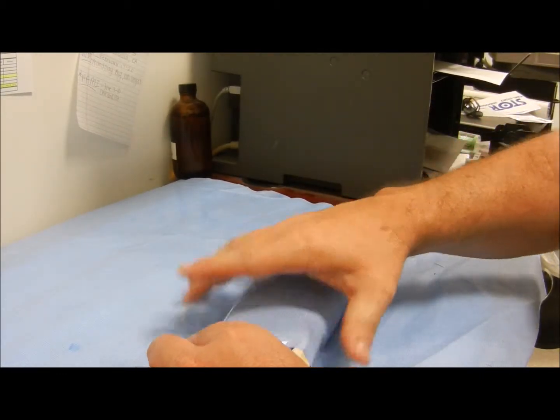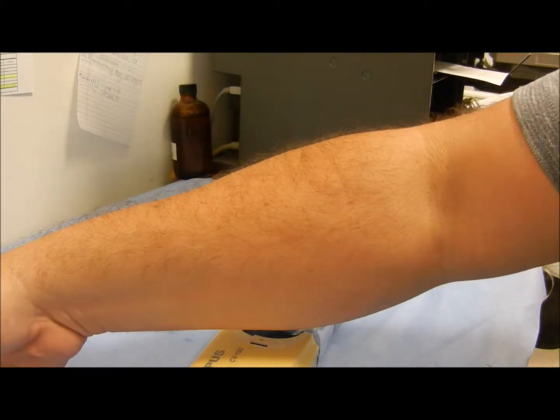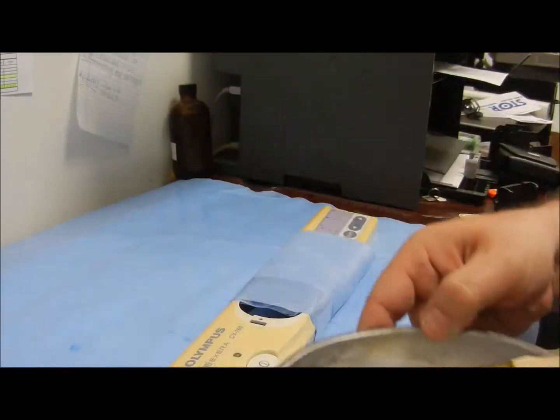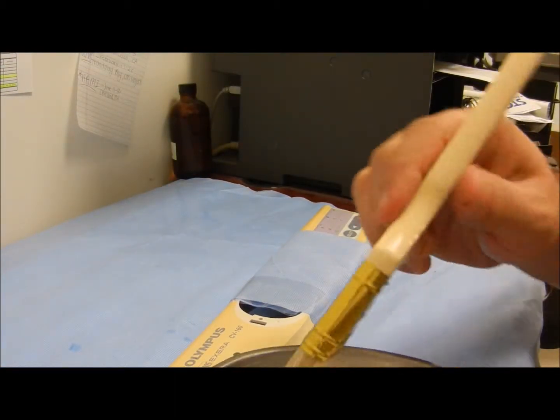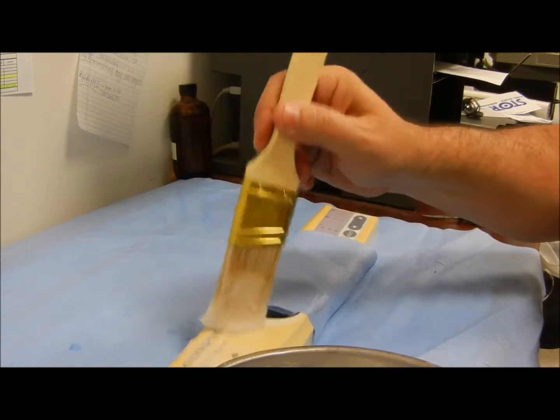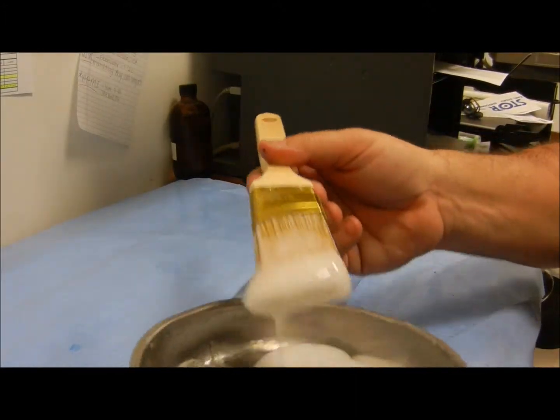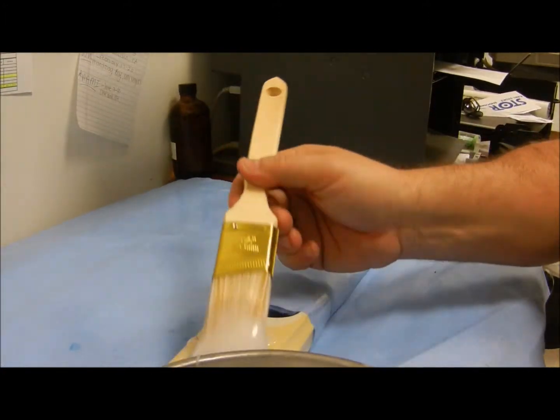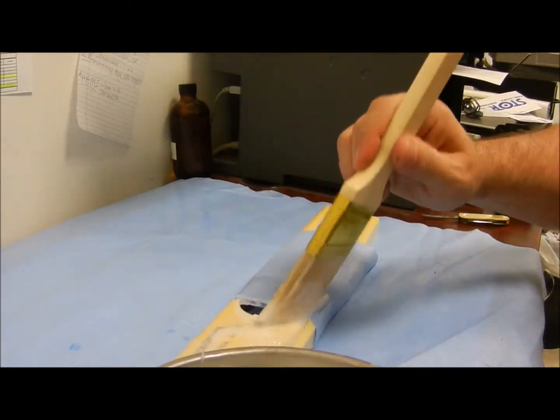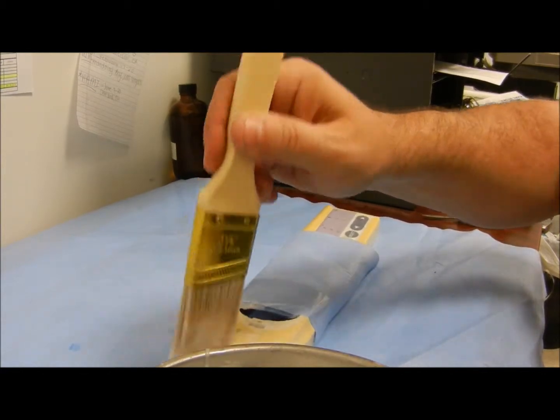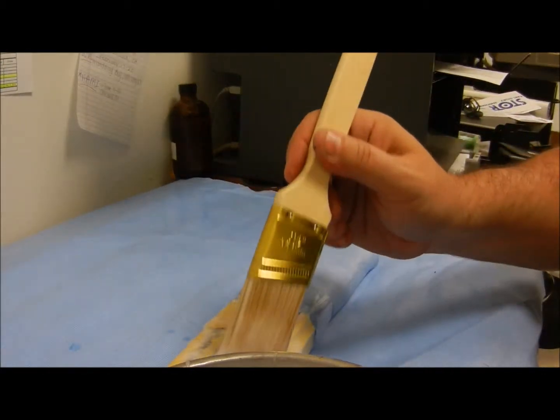So that is that. And now we are going to take our compound. We are going to apply this fairly liberally. You can either use a spray or you can dab it on, but you can put it on pretty thick. It doesn't affect the lettering.